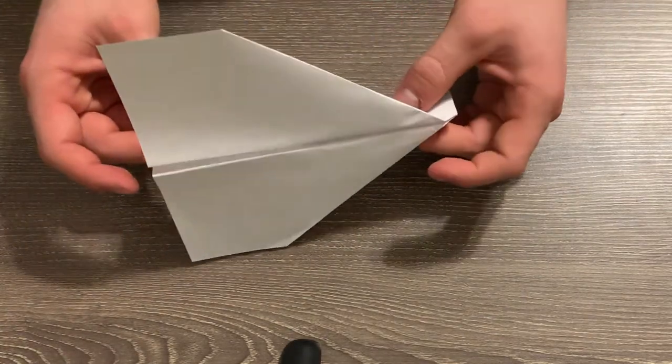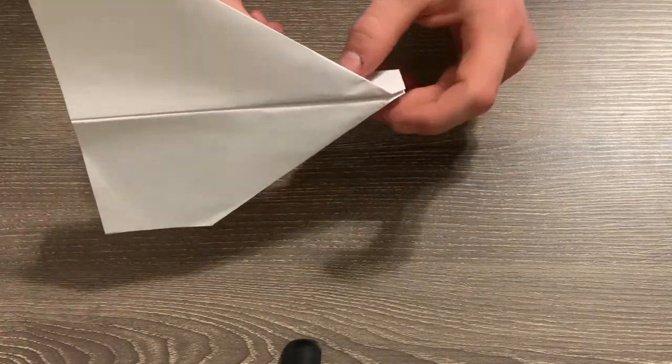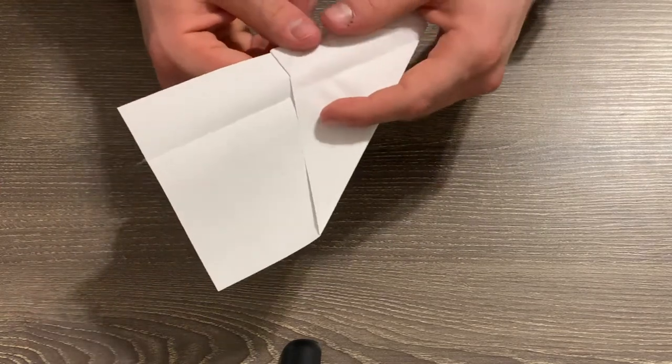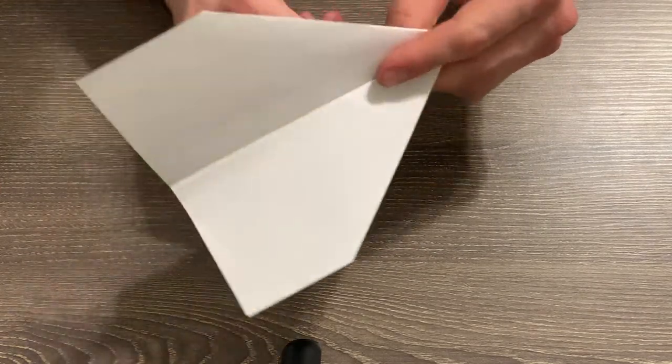Now, if you want to take your paper airplane flying to the next level, you can add some thrust to your paper airplane. Now, thrust is force that pushes it forward, right? So it can fly faster, and maybe the best way to add thrust is by adding a little rubber band to it. So you can do this on either airplane.